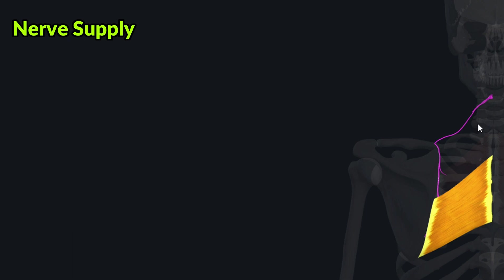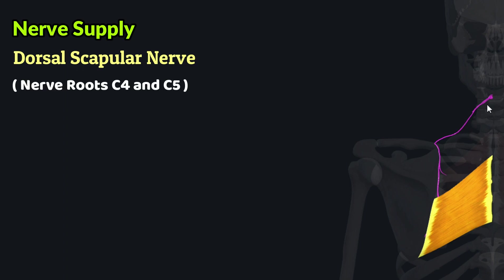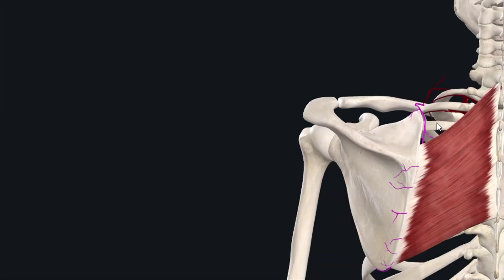In terms of the nerve supply of the rhomboid muscles, these muscles are supplied by the dorsal scapular nerve, which originates from the C4 and C5 cervical nerve roots.